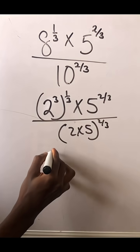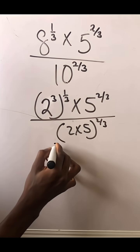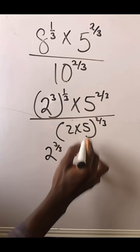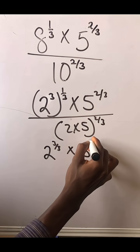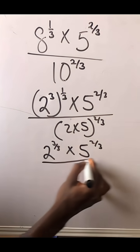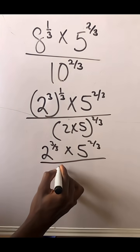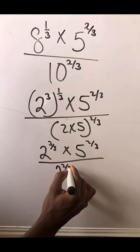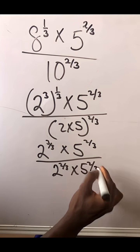Now what do we do? This is multiplied, you get 2 to the power of 3 over 3 times 5 to the power of 2 over 3. And as you open this up, this is 2 to the power of 2 over 3 times 5 to the power of 2 over 3.